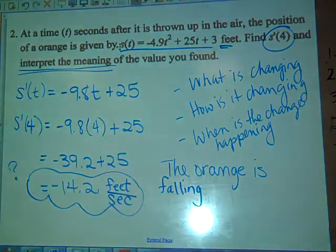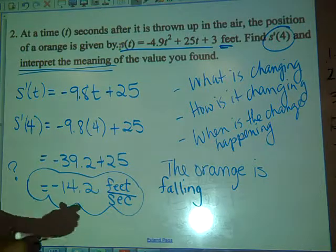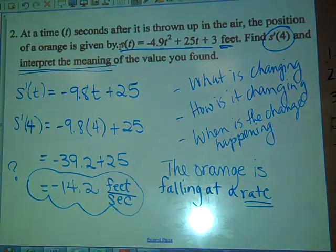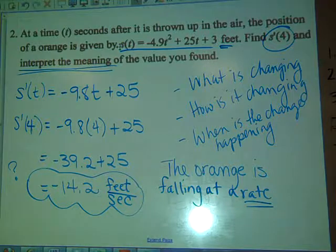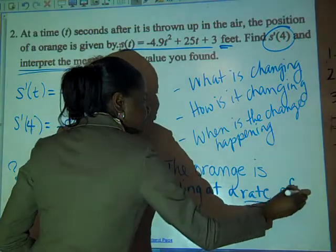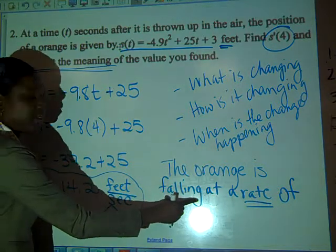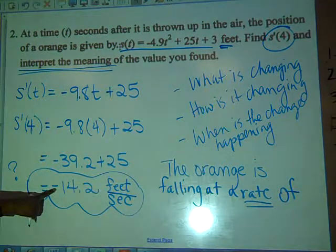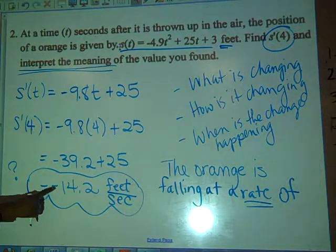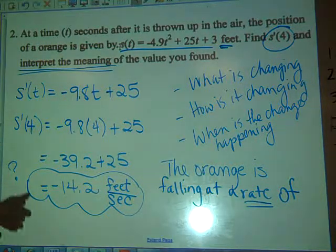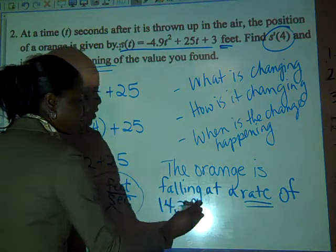And then one of the most important words you need to always use when describing or interpreting a derivative is at a rate. That word better be in your explanation. A derivative is a rate, so rate needs to be somewhere in your explanation. Falling at a rate of what? Careful when you use this word right here. That took care of the negative. When you said falling, that was negative 14.2. So if you say falling at a rate of negative, it's almost saying a double negative. You don't want to do that. Falling is the negative. Falling at a rate of 14.2 feet per second.